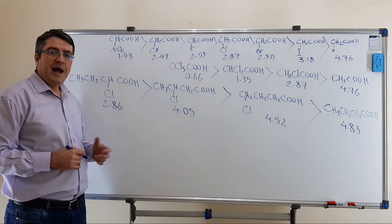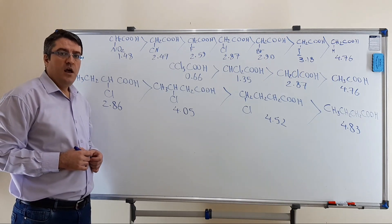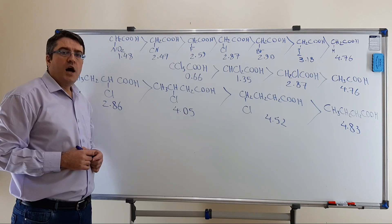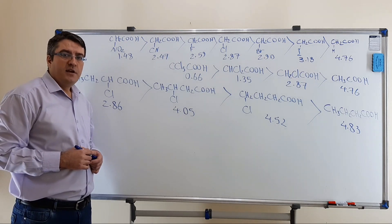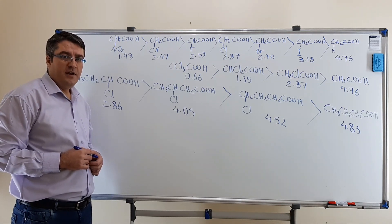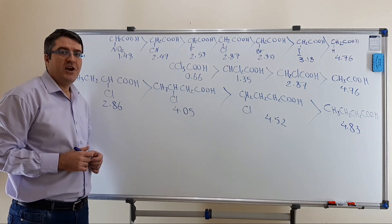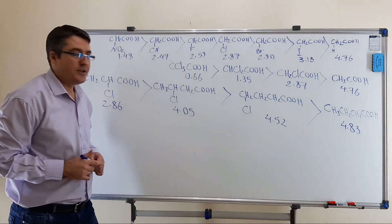These examples show that by increasing the strength of electron-withdrawing groups, increasing their number, or decreasing their distance from the carboxyl group, acidity increases and pKa decreases. In addition to inductive effects, other factors can also be important.